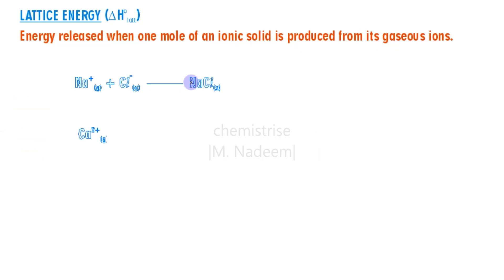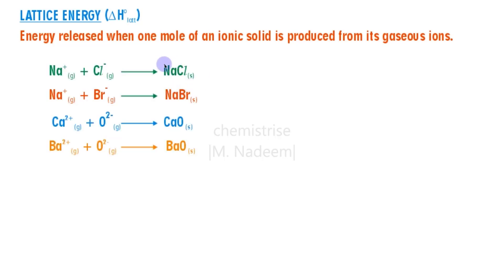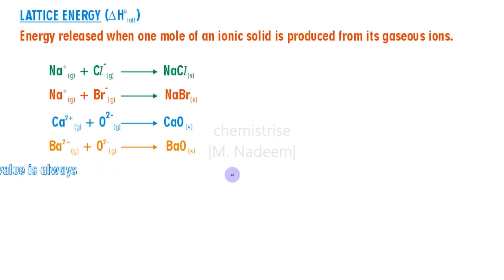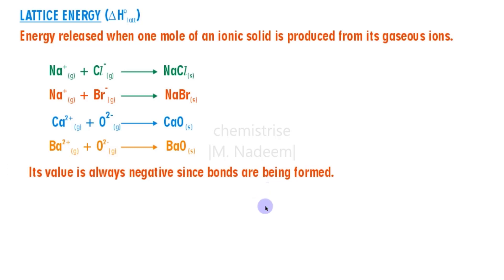Let's see some examples. Here we have different ionic solids like sodium chloride solid made from its gaseous ions — it has to be one mole of solid produced from its gaseous ions. All of these examples represent the lattice energy. Lattice energy involves the making of bonds — the positive and negative gaseous ions attach together to make an ionic solid, and in this process energy is released because bonds are being made.